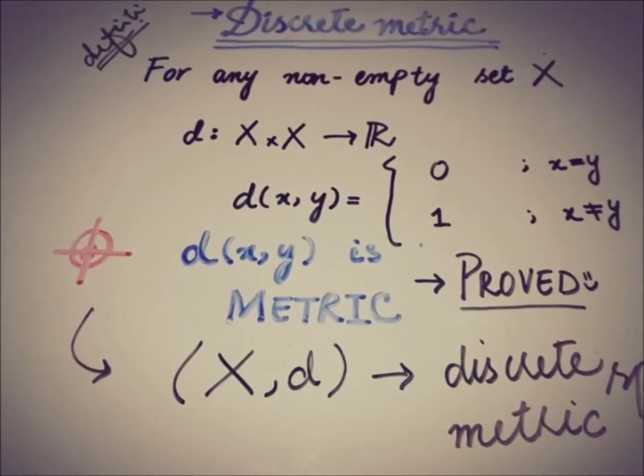And finally, (X,d) is a metric space. This space is called discrete metric space. This metric d, known as discrete metric, is also known as a trivial metric as well.